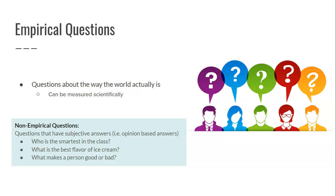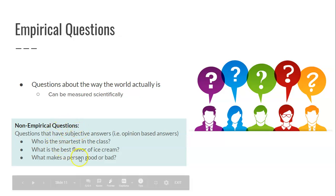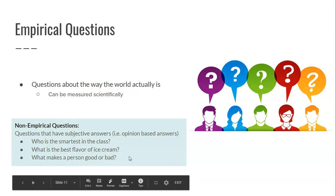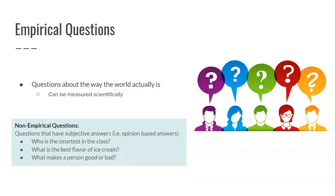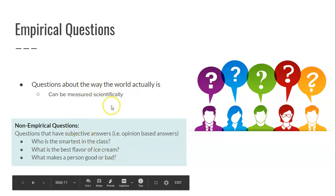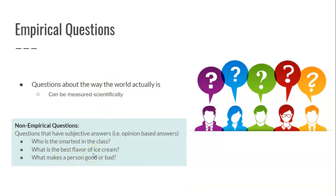Examples of non-empirical questions: who's the smartest in class? Even here, you have to define 'smart' — there are many types of intelligence. If you specify 'smartest based on test scores,' it becomes empirical. But broadly asked, it's subjective. What is the best flavor of ice cream? That's opinion-based. But 'what is the most common favorite flavor of ice cream?' can be answered empirically by counting preferences. Questions involving values — like what makes a person good or bad — are very hard to make empirical. Remember, wording and specificity of questions plays a major role in whether something is empirical or non-empirical, because non-empirical questions can be reworded to become empirical.